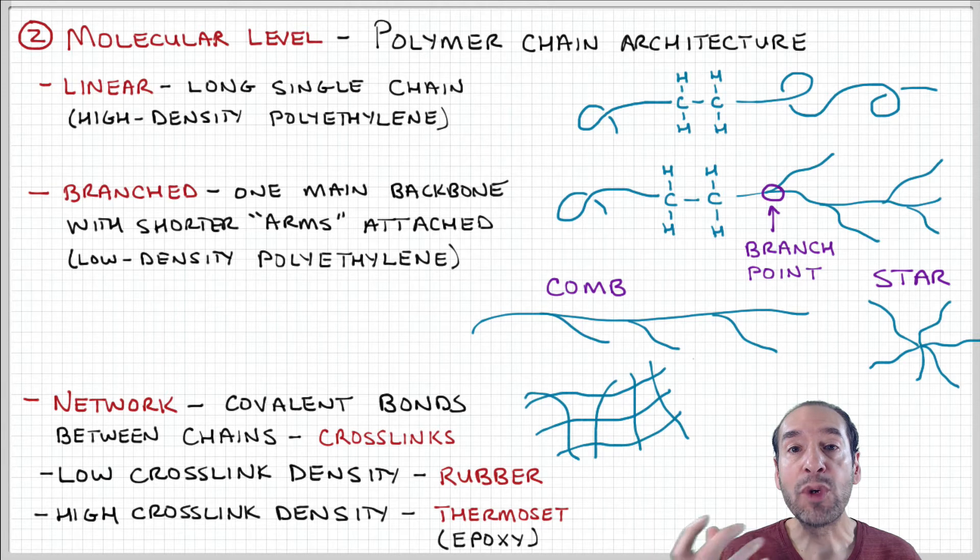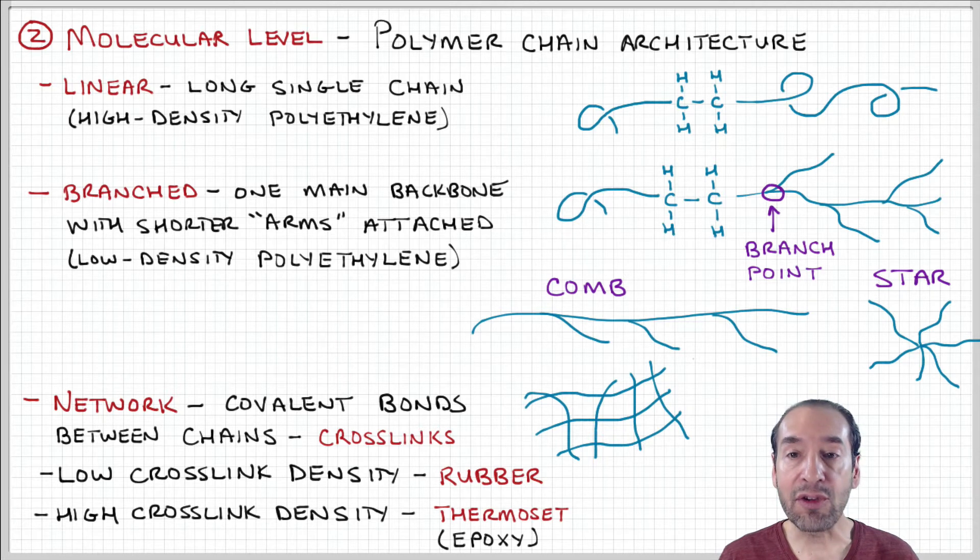If there's a low cross-link density or weak cross-links, the material can be deformed and extended, like what we think of as rubbers—this rubbery behavior.